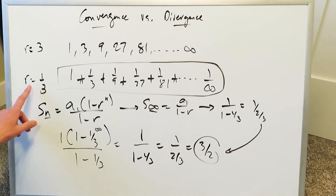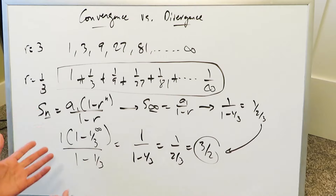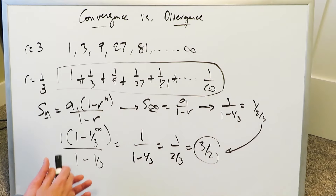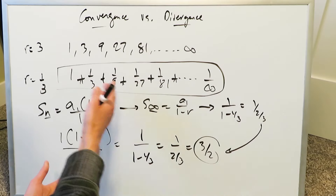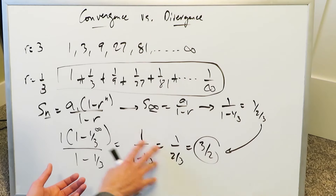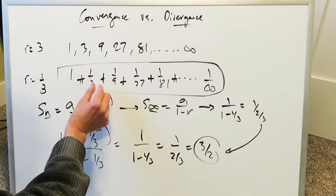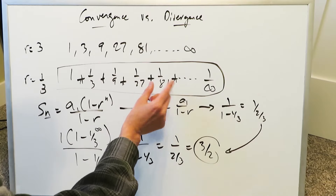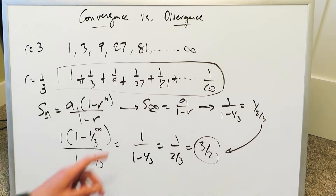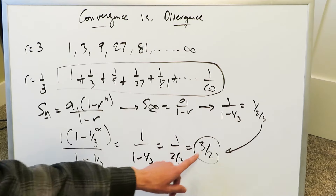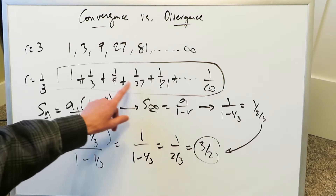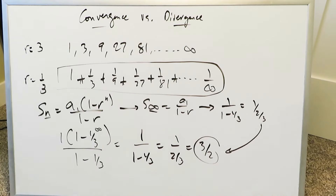This series is convergent. It's convergent simply because the r value was less than 1. When you sum all the sequential numbers, you get a finite value. Initially you have a large gain in the sum, but very quickly these added terms become so minuscularly small that they contribute very little to the grand total. In the end, the total sum of this infinite geometric series is 3/2.